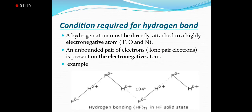The conditions required for hydrogen bonding are: first, a hydrogen atom must be directly attached to a highly electronegative atom. Second, an unbonded lone pair of electrons must be present on another electronegative atom.